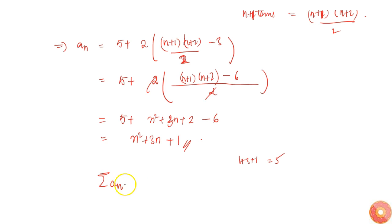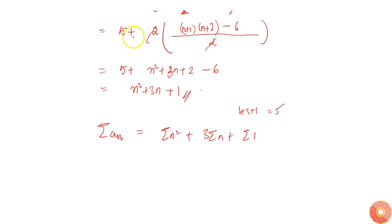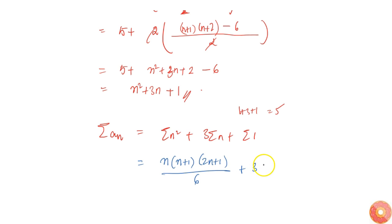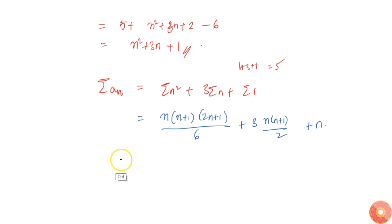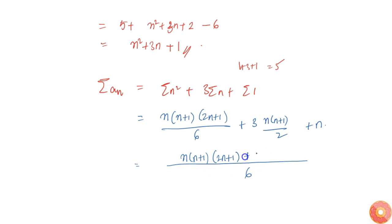Now we need to find Sₙ = Σaₙ over the first n natural numbers. That becomes Σn² + 3Σn + Σ1. We know Σn² = n(n+1)(2n+1)/6, and 3Σn = 3 · n(n+1)/2, and Σ1 = n. Combining everything over 6, we get n(n+1)(2n+1) plus 9n(n+1) plus 6n, all over 6.